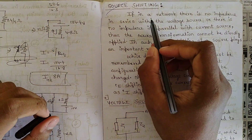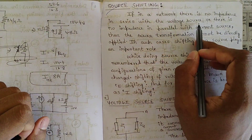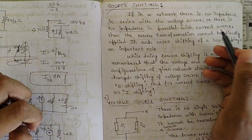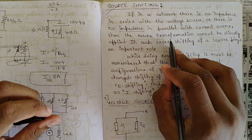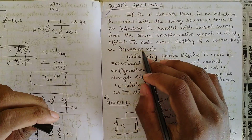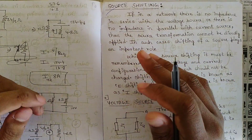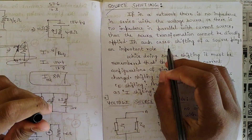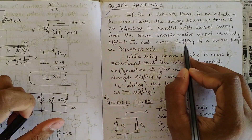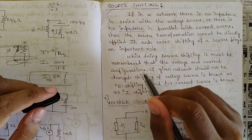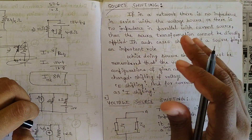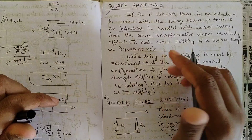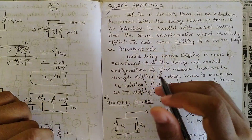Source shifting: if in a network there is no impedance in series with the voltage source, or there is no impedance in parallel with the current source — impedance or resistance, they are one and the same — then the source transformation cannot be directly applied. In order to apply source transformation, we should have a resistance in parallel with the current source or a resistance in series with the voltage source. In such cases, shifting of a source plays an important role.